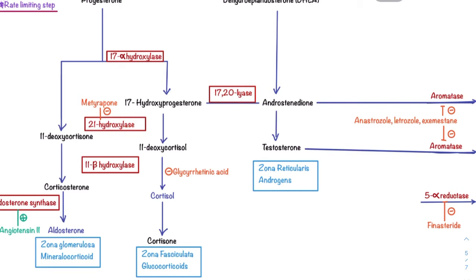Next, the drug glycyrrhitinic acid will inhibit the formation of cortisol from 11-deoxycortisol.